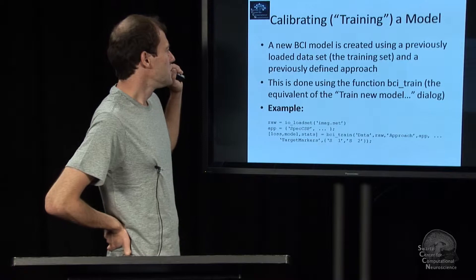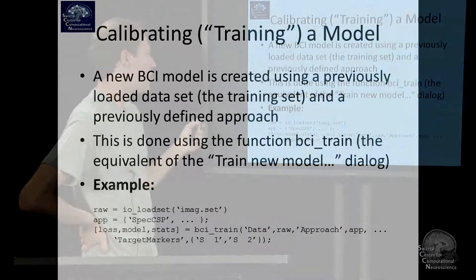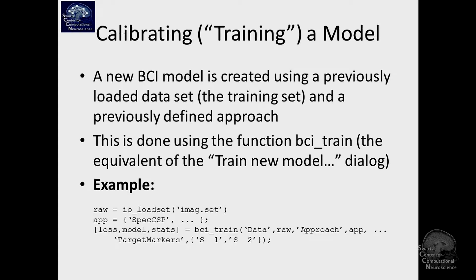Usually, as I already explained in my demo, what you typically do to create a new BCI model is you load some data like here: raw equals io_loadset and some data set. Now we have data. Then you define your approach like we just said. Here I say I want to spec CSP paradigm and then maybe some arguments. And now you're done with that.